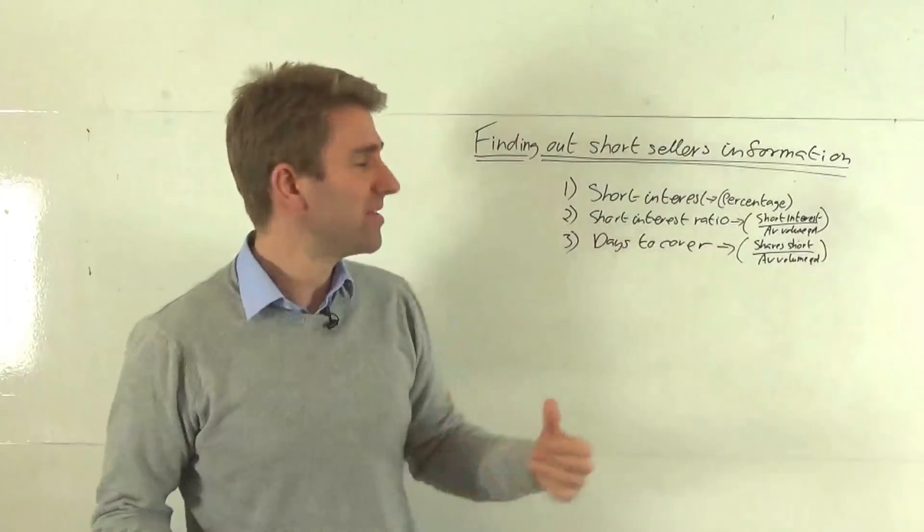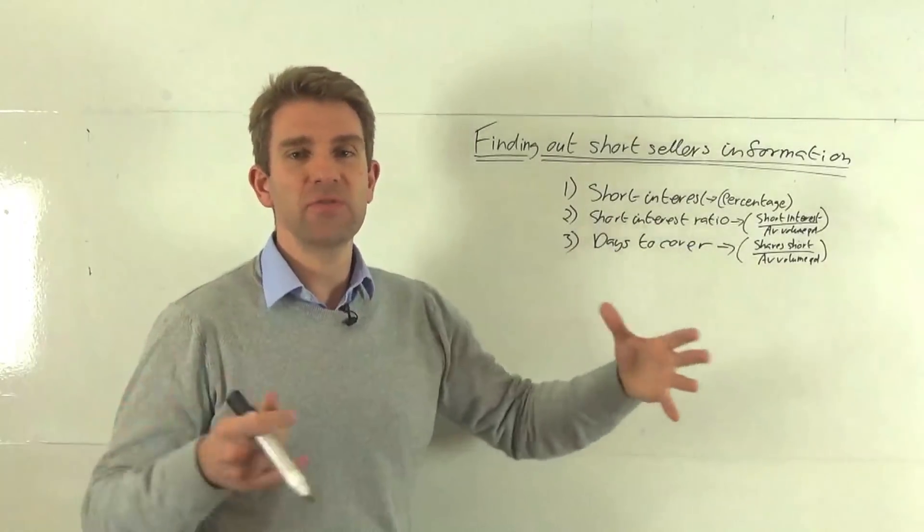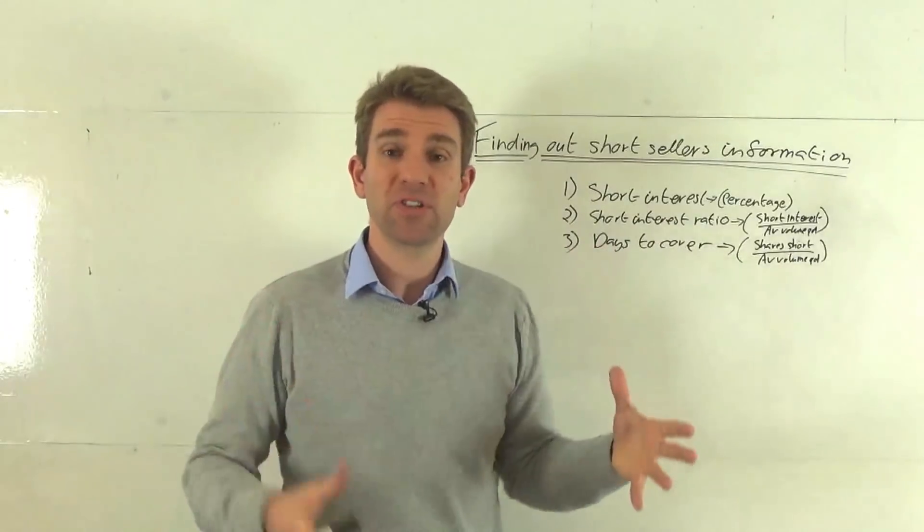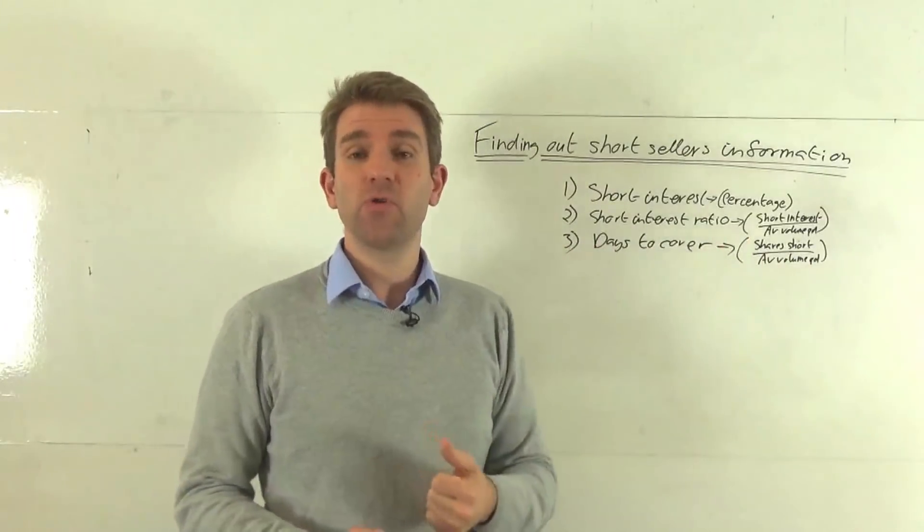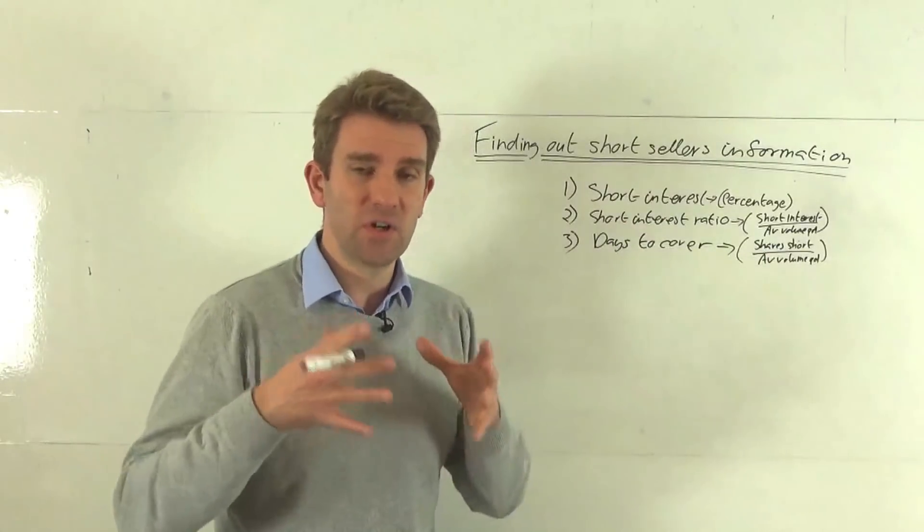This percentage is really kind of a broad gauge and gives us an idea. That's normally the bigger picture that everyone looks at. People say okay that company's got 25% short interest and that's considered high. You got 20% or above it's considered a reasonably high short interest.